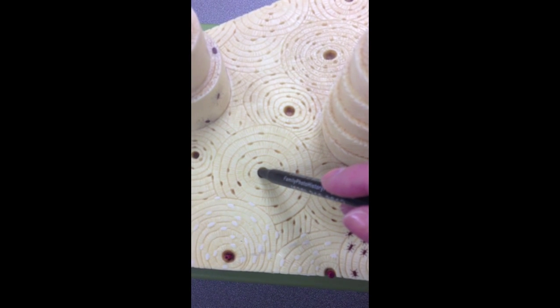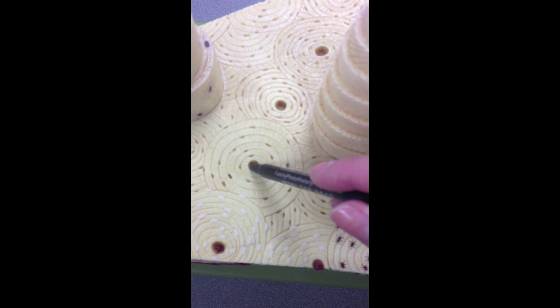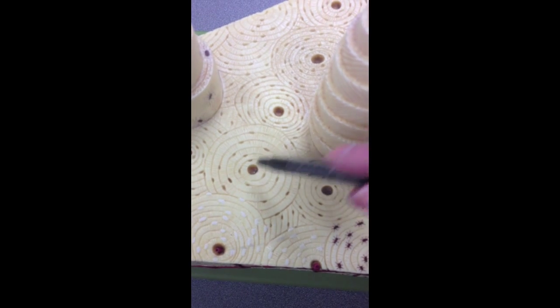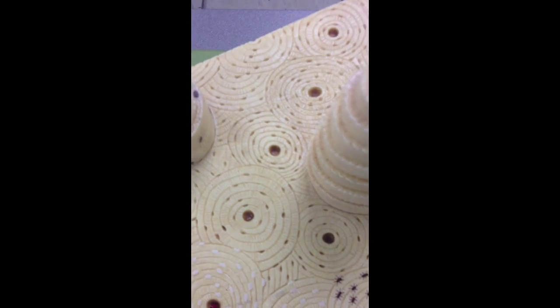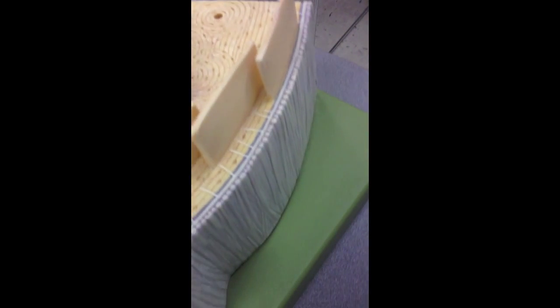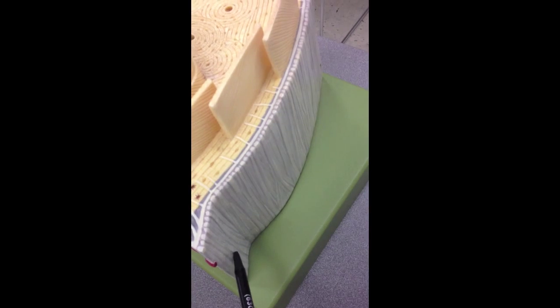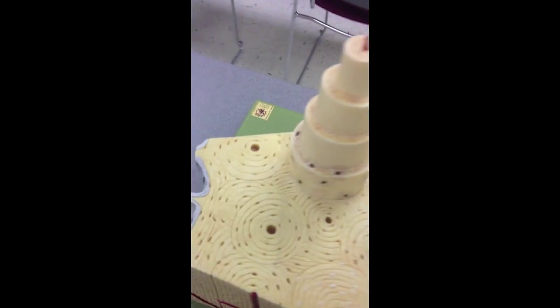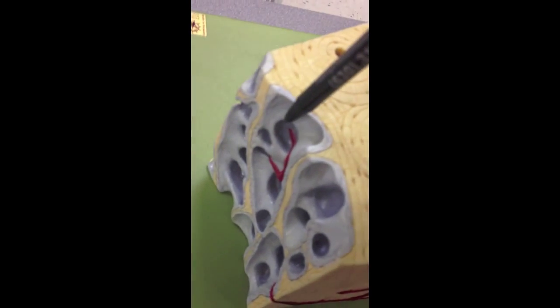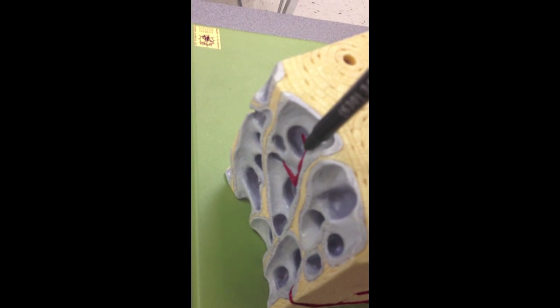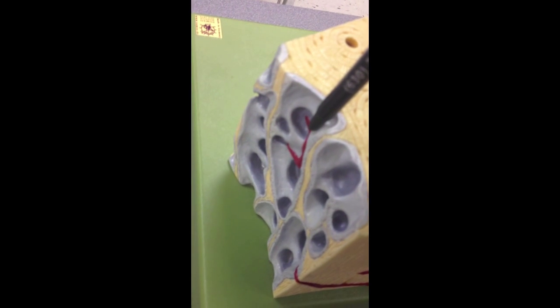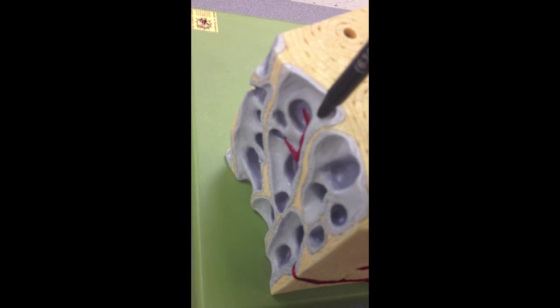called an osteon or a Haversian system. The last two things on this model are layers. This very outer layer is the periosteum, and this very inner layer on the spongy bone is endosteum. It's lining that medullary cavity.